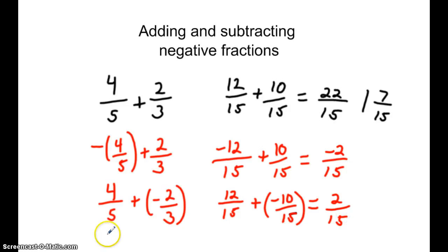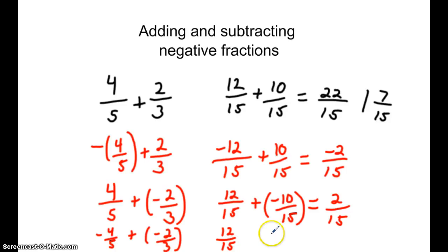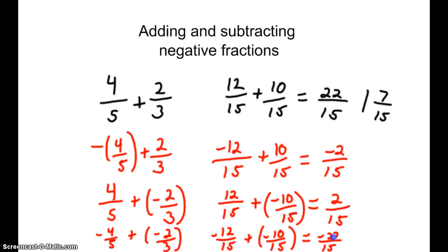Now one last look: what if we made both fractions negative — negative 4 fifths adding a negative 2 thirds? We will still be working with 12 fifteenths and 10 fifteenths. These are now both negative numbers that we are adding. The denominator stays the same. Negative 12 plus a negative 10 will be negative 22 fifteenths, and that simplifies to negative 1 and 7 fifteenths. This is how negatives impact fractions when we're adding.